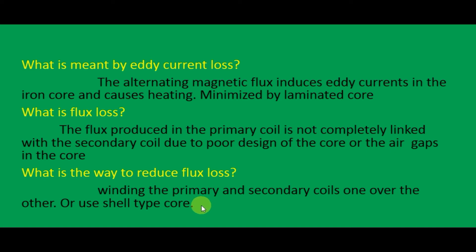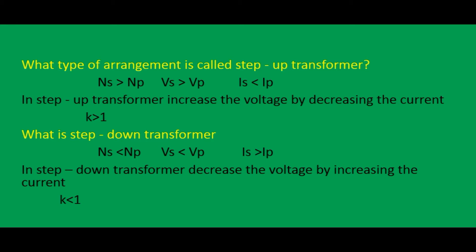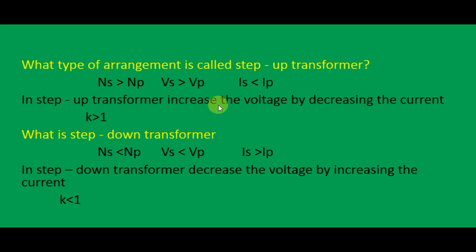What type of arrangement is called a step-up transformer? In a step-up transformer, the number of turns in the secondary coil is high. The voltage in the secondary coil is also high but the current is low. That is: NS greater than NP, VS greater than VP, and IS less than IP. So a step-up transformer increases voltage by decreasing current. The transformer ratio K is greater than 1.